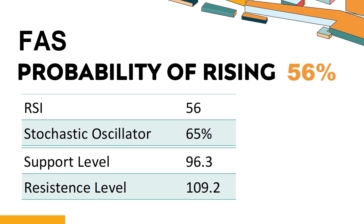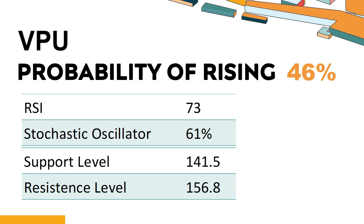FAS's short-term support level is 98.8. If it falls below 98.8 during the session, it will have a chance to test 96.3. FAS's short-term resistance level is 107.7. If it breaks through 107.7 during the session, it will look up to 109.2.